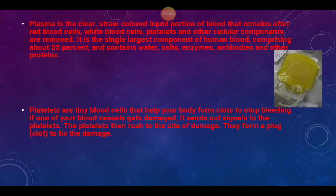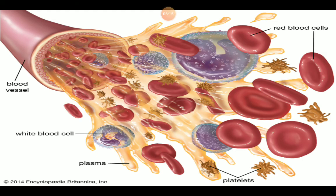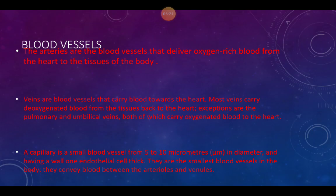Platelets are tiny blood cells that help your body form clots to stop bleeding. When you get a cut, the platelets form a clot that actually stops the blood — the bandage just covers it to prevent insects or other contaminants. When a blood vessel is damaged, it sends out a signal to the platelets; the platelets rush to the site of the damage and form a plug or clot to fix it.